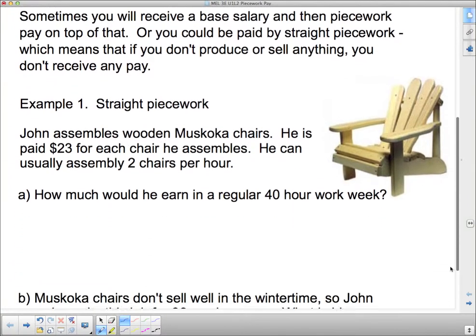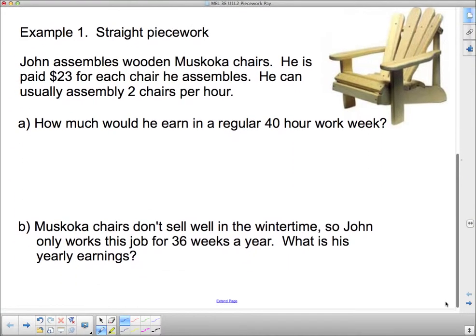Example 1: Straight piecework. John assembles wooden Muskoka chairs. He is paid $23 for each chair he assembles. He can usually assemble two chairs per hour. This is what a Muskoka chair is in case you didn't know. How much would he earn in a regular 40-hour work week?